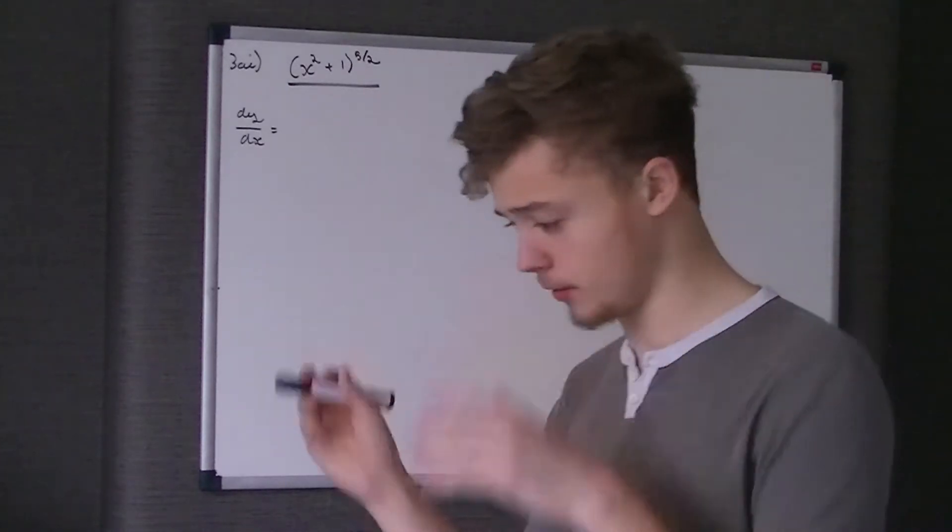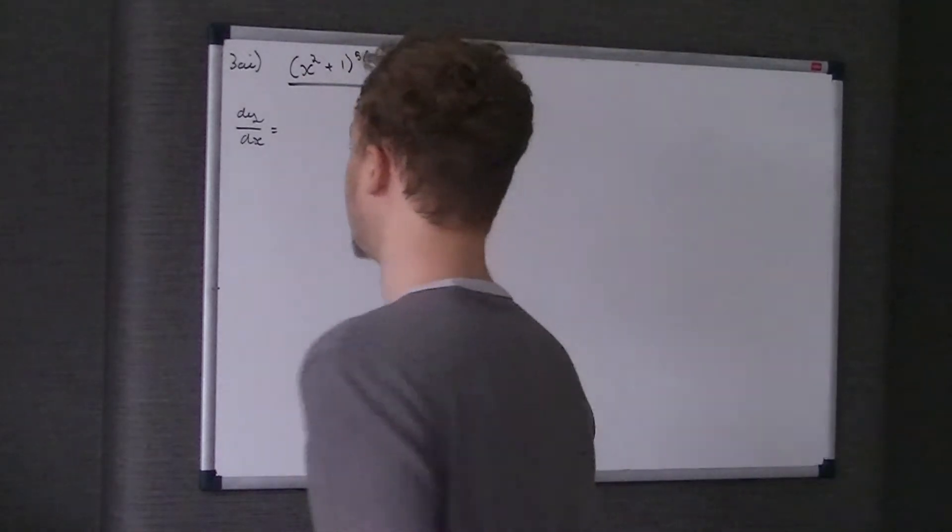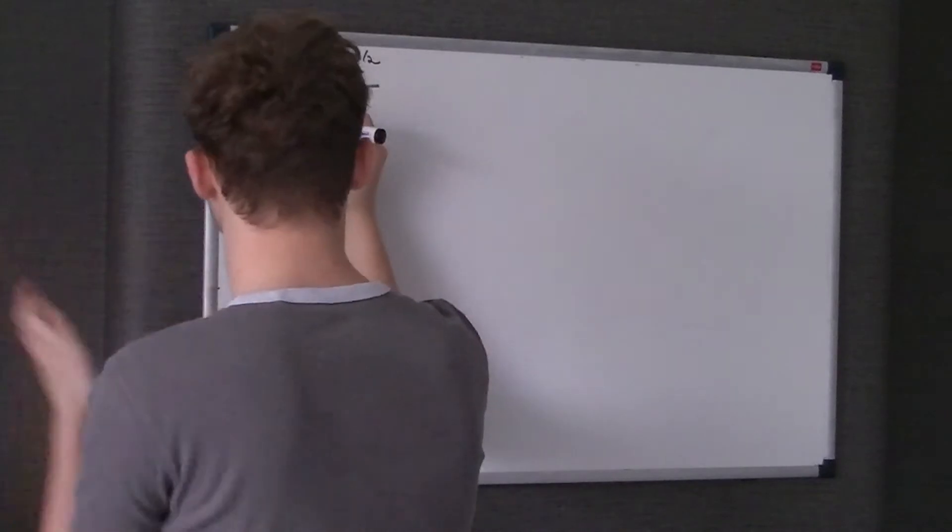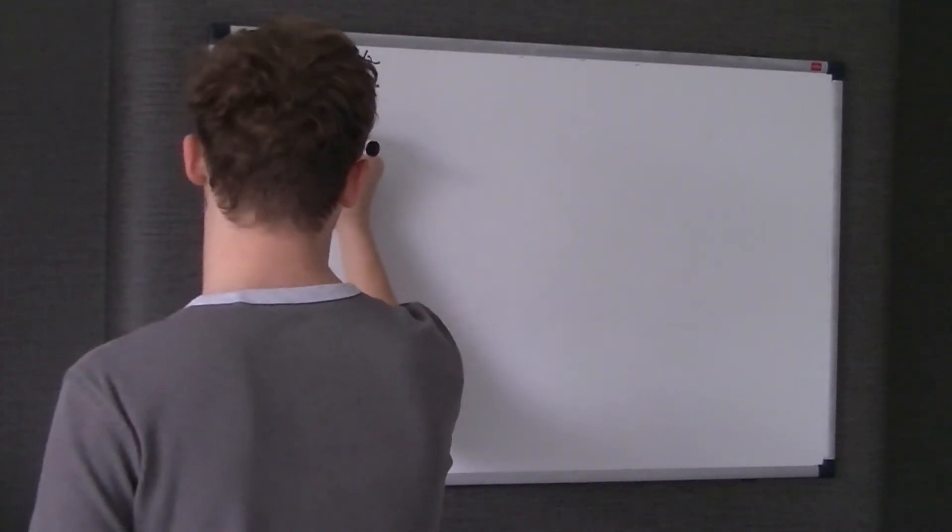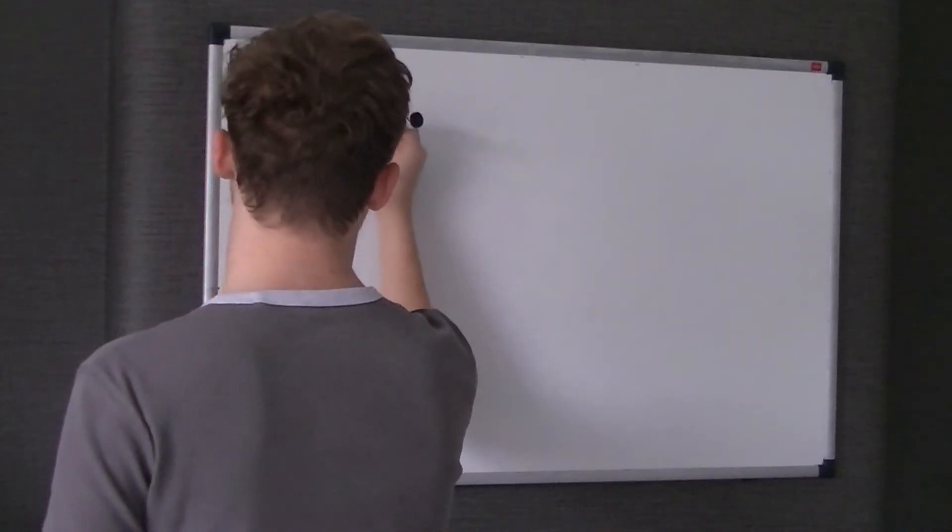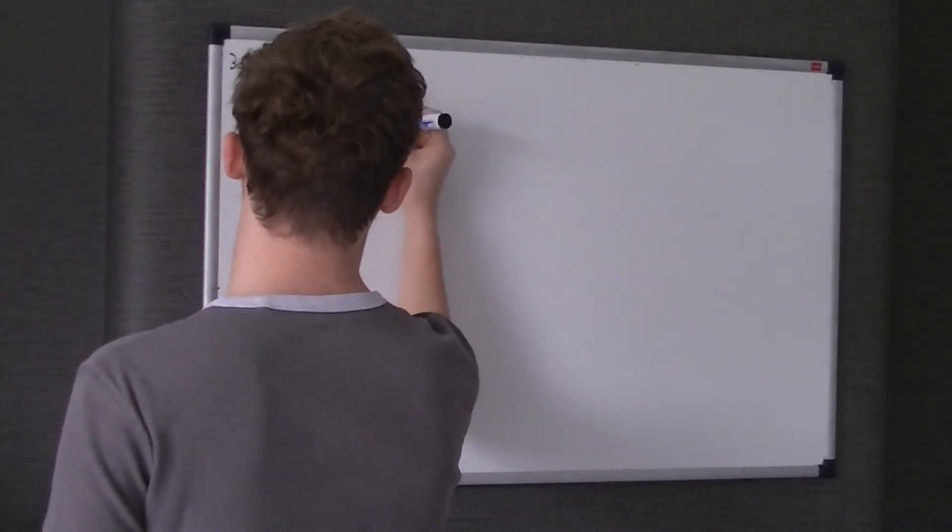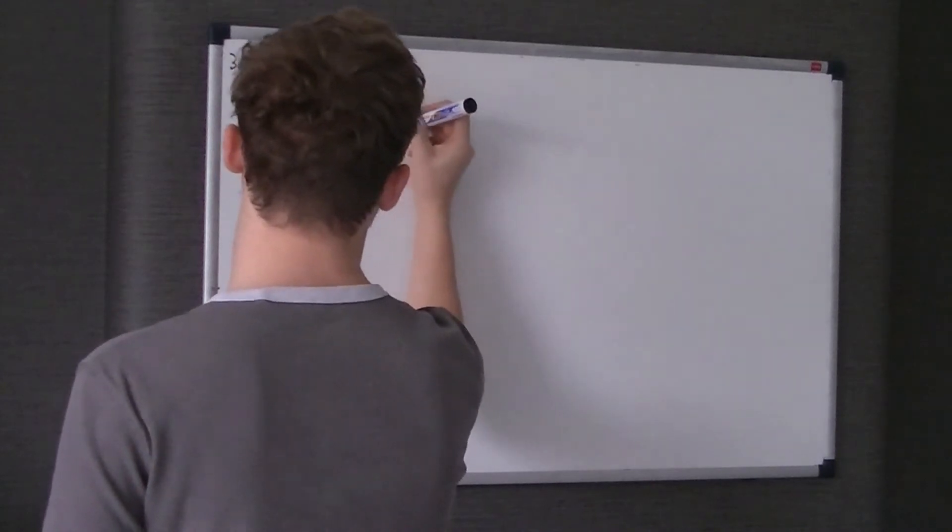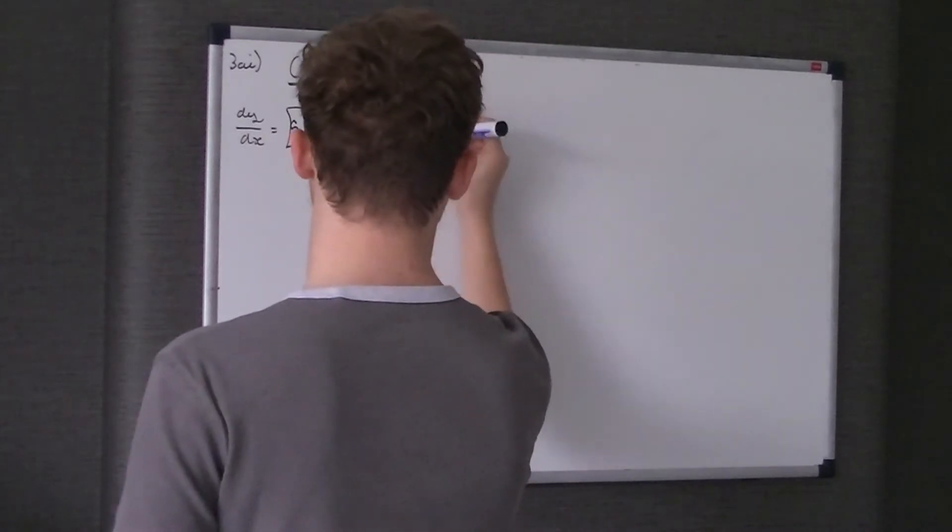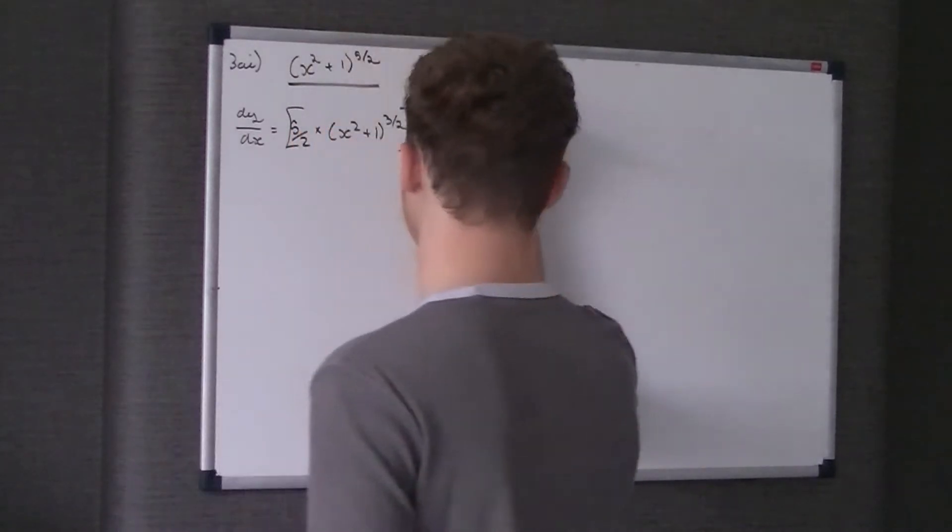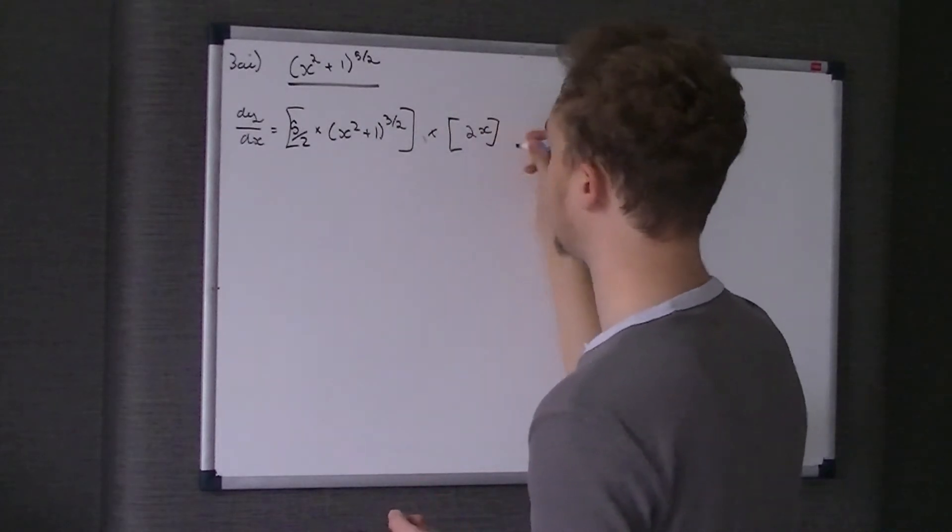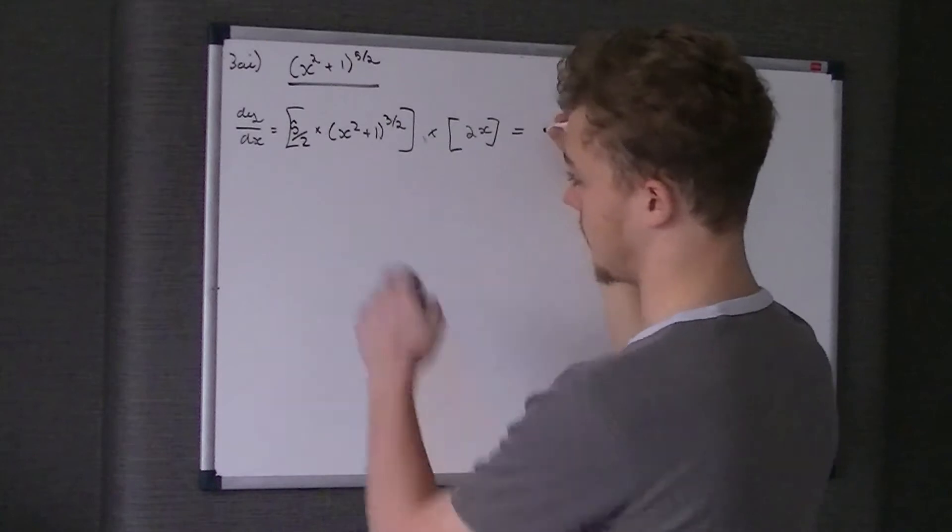Because it's in a bracket, we use the bracket rule. We remove the power, take 1 from the power, and times that by the differential of what's inside brackets.